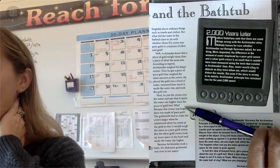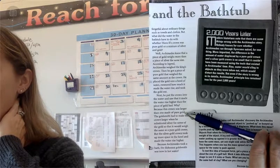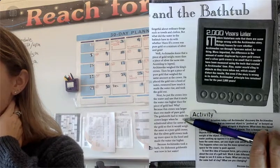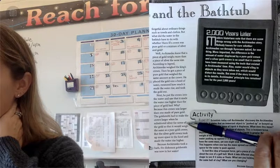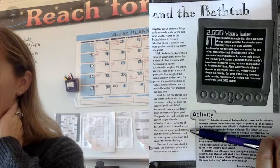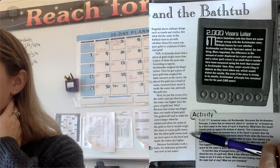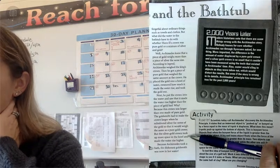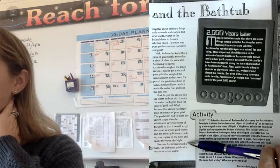Because this crown was larger than one made of pure gold. The goldsmith had to make the crown larger when he substituted silver for some of the gold, so that it would weigh the same as a pure gold crown.